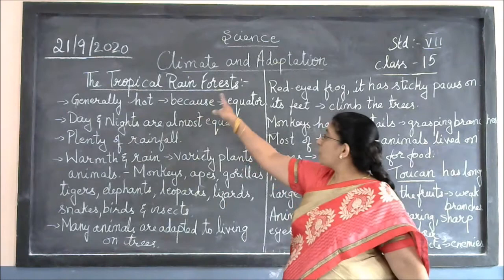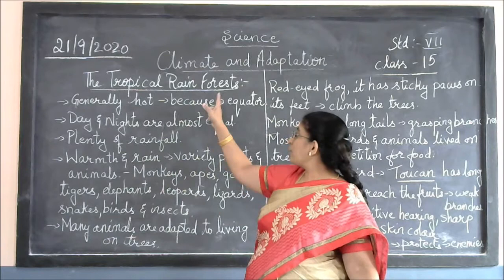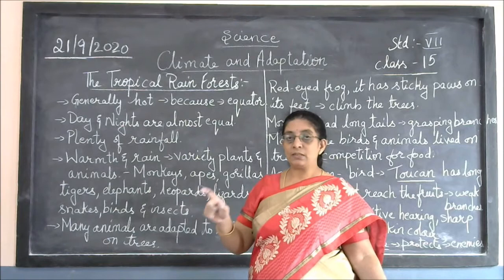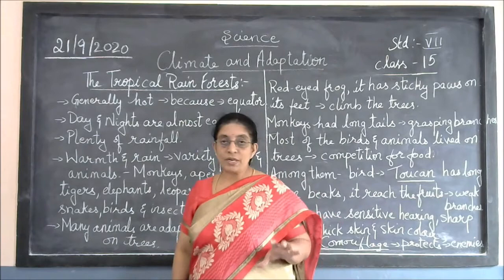Now the next region we are going to see is the tropical rainforest. Why has it got this name? Tropical means most of the time it is hot. Rainforest means that even though the season is very hot, you keep getting rain from the air, and because of that the forests are formed. That is why it is called the tropical rainforest.